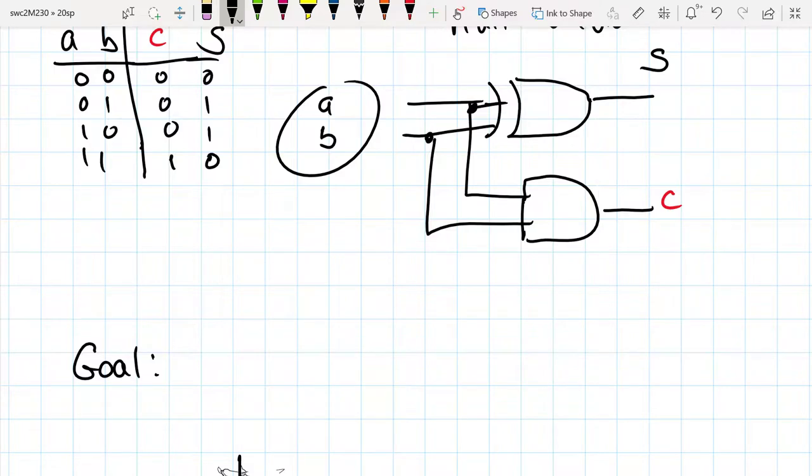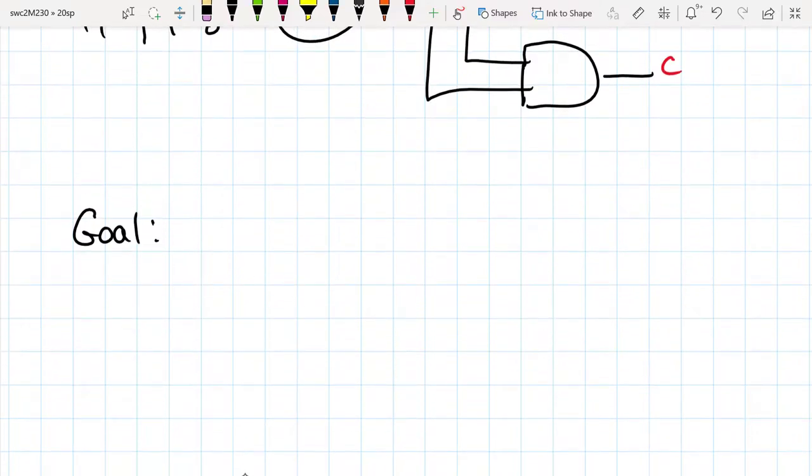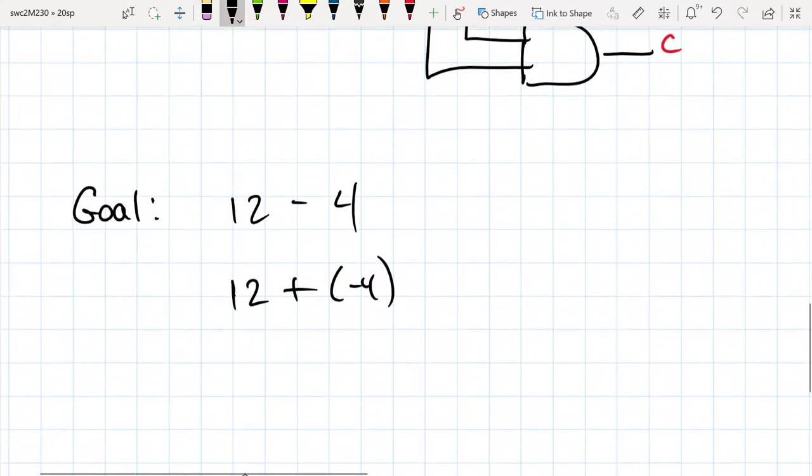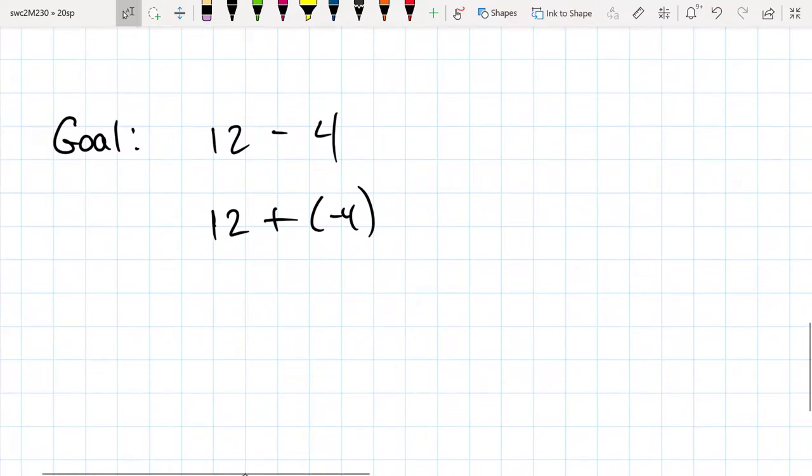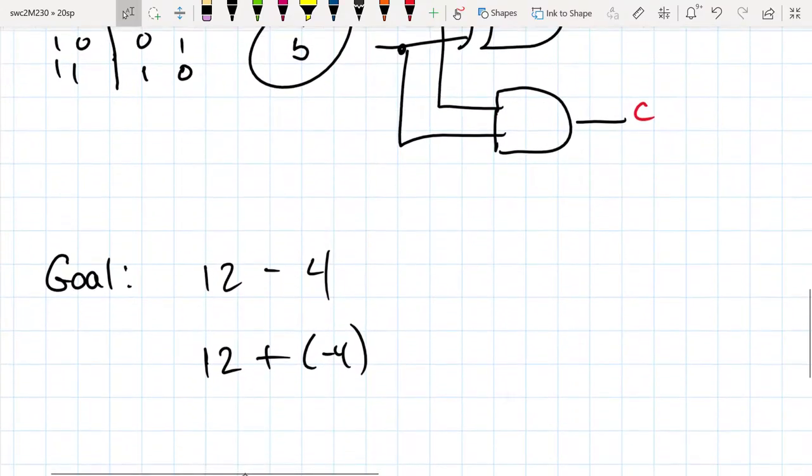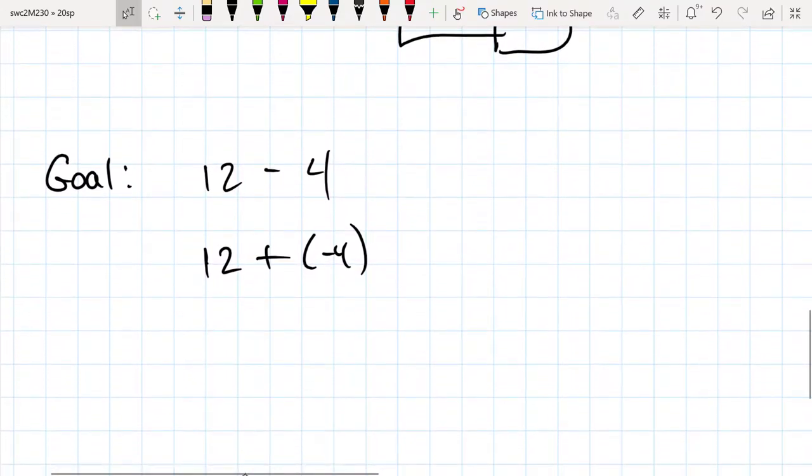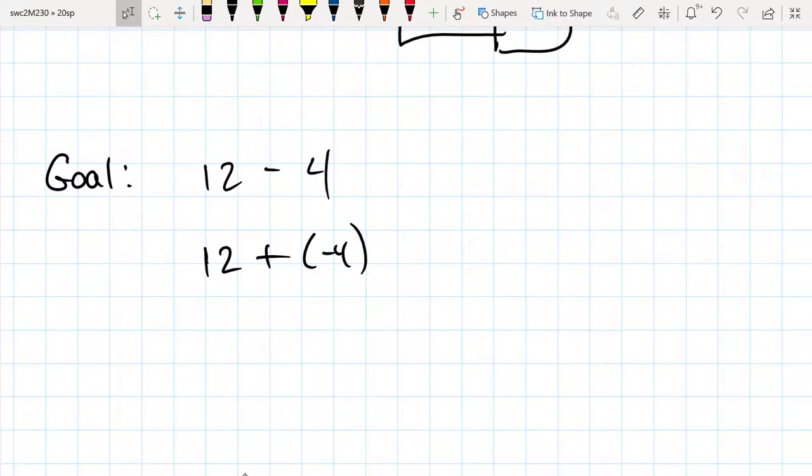So we want to be able to take something that's like this, a 12 minus 4, and then use the adder and add 2 at a negative 4. So we want to use the adder, but somehow we want to change the value of one of the bitstreams so that we essentially are adding a negative value or the additive inverse.